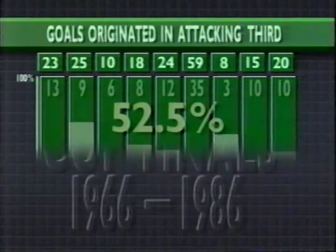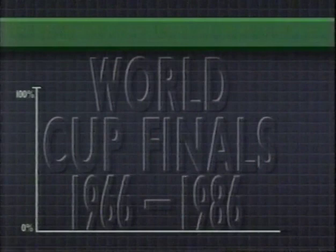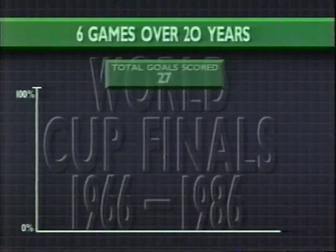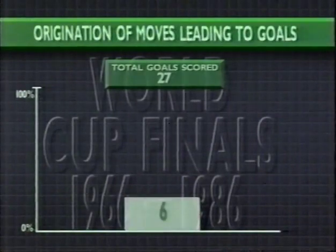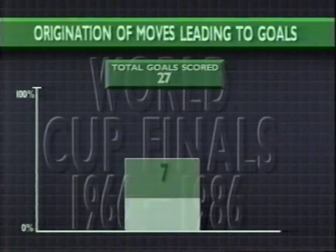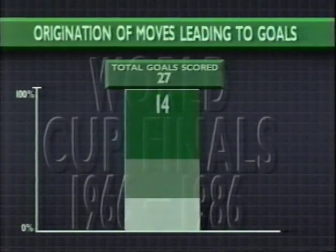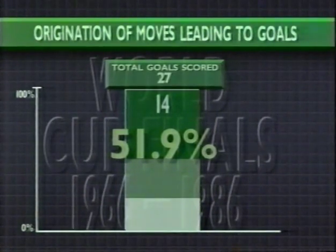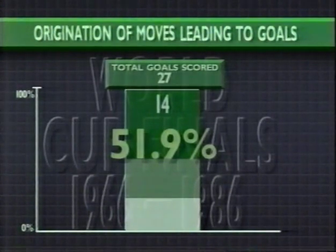Looking at the six World Cup finals between 1966 and 1986, even at the very pinnacle of world soccer over a period spanning 20 years, the results are remarkably similar. Out of 27 goals, only six — 22.2% — were scored from moves starting in the defending third. Seven goals — 25.9% — came from moves started in the middle third. But 14 goals — 51.9% — resulted from moves that started in the attacking third of the field. The overwhelming majority of all goals result from movements that originate in the attacking third.